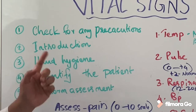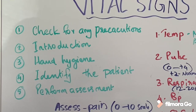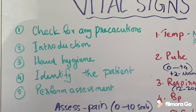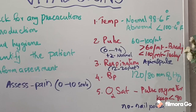The second step is to introduce yourself. The third step is to do hand hygiene. The fourth step is to identify the patient using two universally accepted identifications: the patient's name and date of birth. You can also ask about allergies. The fifth step is to perform the assessment.